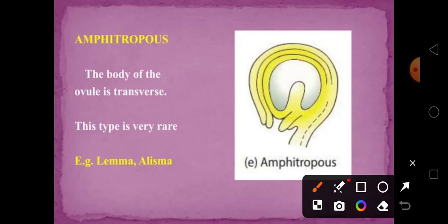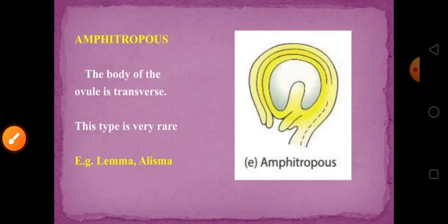Amphitropus: in amphitropus the body of the ovule is transverse, and it is a very rare type of ovule in plants.